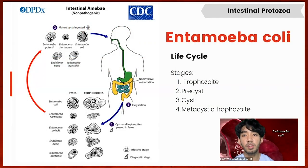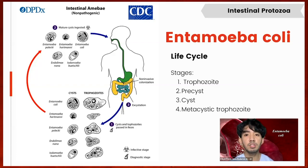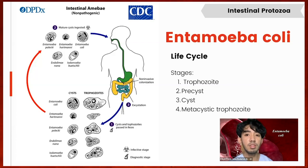The life cycle of Entamoeba coli is shared with other non-pathogenic intestinal amoeba including Entamoeba hartmanni, Entamoeba polecki, Iodamoeba butschlii, and Endolimax nana. It starts with ingestion of the infective cyst, which passes through the acidic stomach protected by the cyst walls. Excystation occurs in the alkaline environment of the lower small intestines. The metacystic trophozoites colonize the large intestines and live on the mucous coat covering the intestinal mucosa. Since the amoeba are non-invasive, they do not cause disease. Reproduction is through binary fission of the trophozoites, and encystation occurs as the amoeba passes through the lower colon.